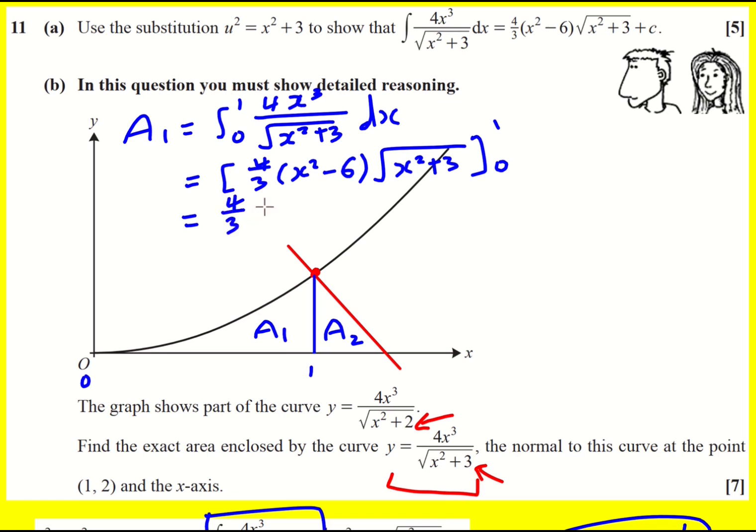So let's put in the 1. I'm going to get 4 over 3 times minus 5 times 1 squared is 1, plus 3 is 4, square root of it is 2, minus 4 over 3 times minus 6 times root 3. Right, I'm going to times these together. I'm going to get minus 40 over 3 plus, because there's a double negative here, 24 root 3 over 3, which is going to become 8 root 3 minus 40 over 3. So that is that area there, the exact value.